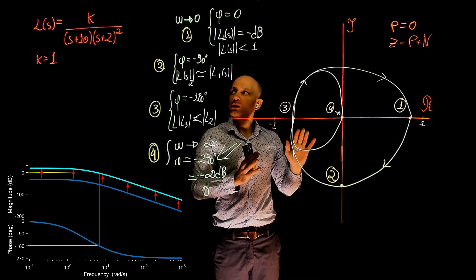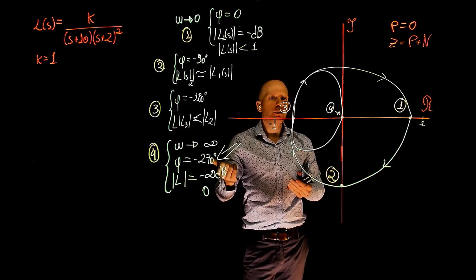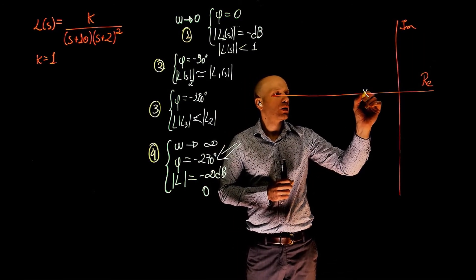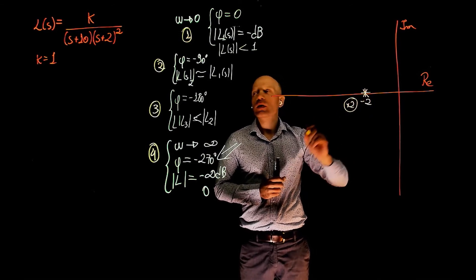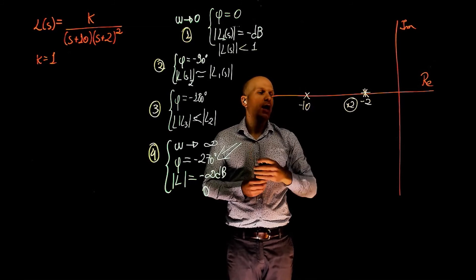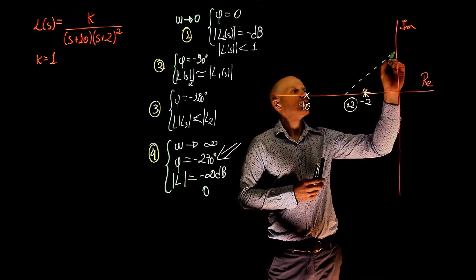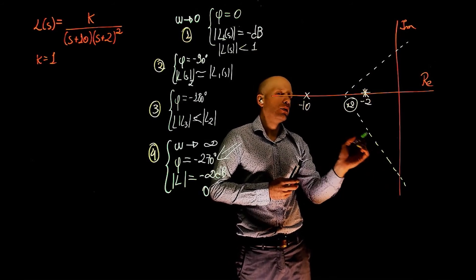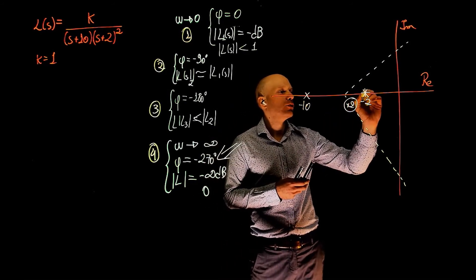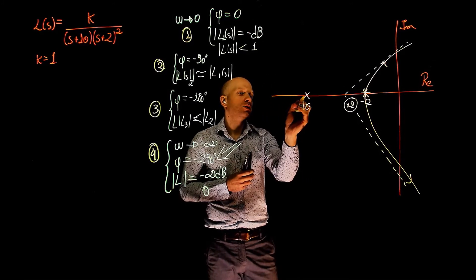Now let's look at the root locus of this system to make sure our analysis makes sense. For this particular example, we don't need to calculate the value of k — we did that in the previous exercise. We have two poles at negative 2 and one pole at negative 10. There are no zeros, so we have three asymptotes going to infinity: one going at negative 180 degrees and two going at angles of positive and negative 60 degrees. The centroid of the asymptotes should be somewhere in between. The two poles go to the asymptotes at 60 and negative 60 degrees, and this pole goes to negative infinity.